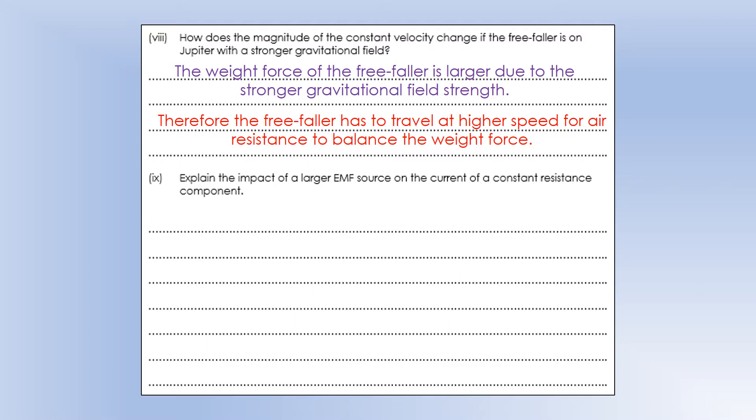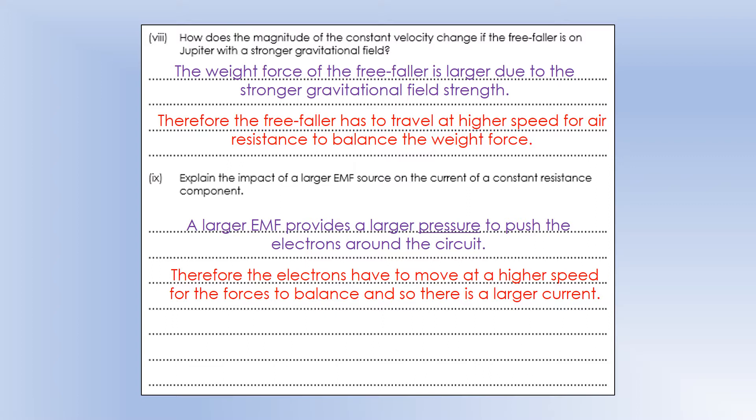And that, again, is the same kind of the same thing as increasing the EMF source. A larger EMF provides a larger pressure. We don't usually talk about force so much in a circuit. We kind of talk about pressure, because it's spread over an area. So an EMF provides a larger pressure to push electrons around the circuit. To reach a dynamic equilibrium, like a circuit does, the electrons have to move at higher speed for the forces to balance. And the way we describe that in a circuit is we've got a larger current. So that's how those two systems are similar to each other.